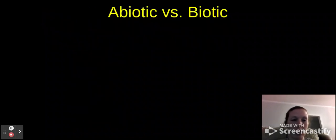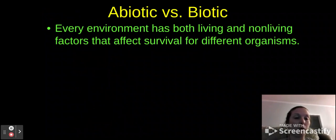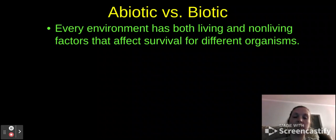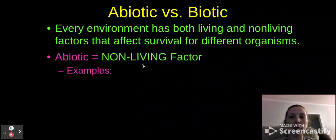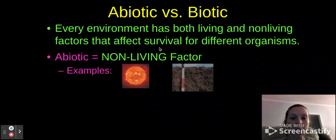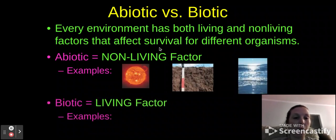Let's quickly go over abiotic versus biotic. Every environment has both living and non-living factors that will affect how organisms survive. We talked about survival of the fittest when it came to evolution — that's all based on these factors that can make or break an organism. Remember, abiotic is your non-living factor — that's like the sun, the dirt, the composition, water, things like that, your elements.